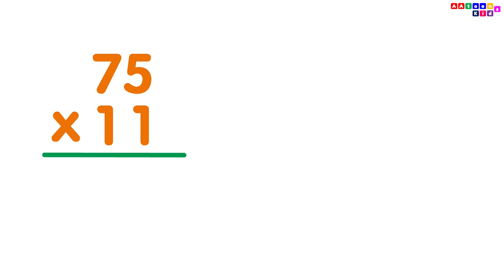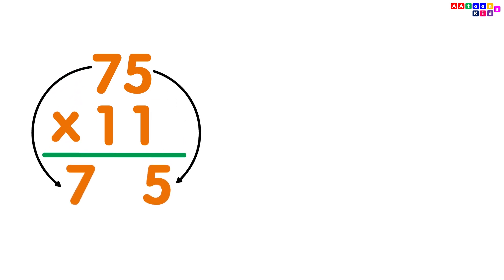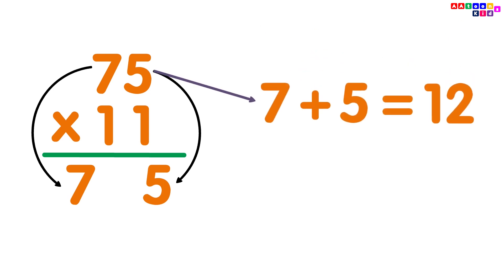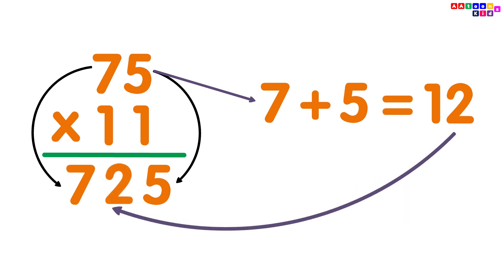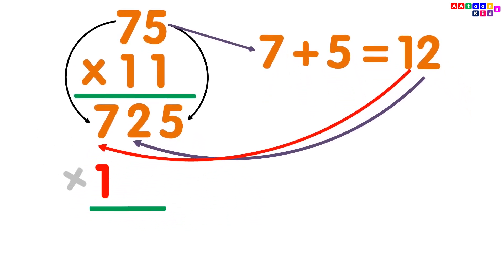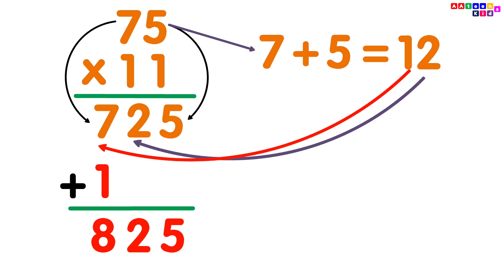75 multiplied by 11. Simply write the digits 7 and 5. Then add the digits: 7 plus 5 equals 12. Put the 2 between digits 7 and 5, then add 1 with 7. You will get your answer 825. So, 75 multiplied by 11 is equal to 825.